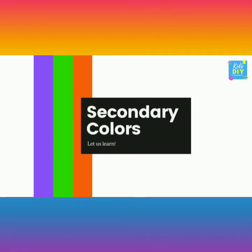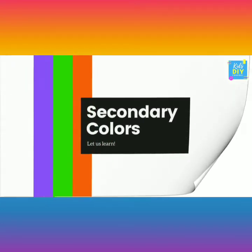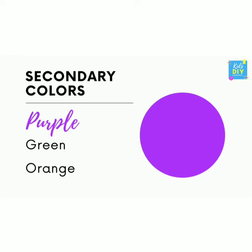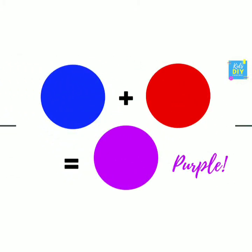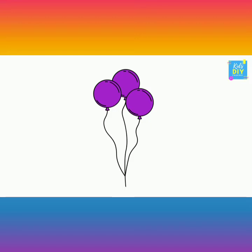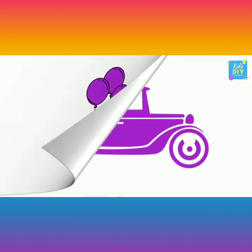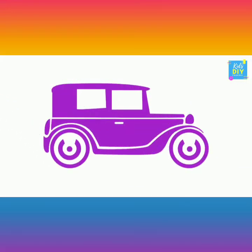Next, let us learn what are the secondary colors. Purple is the first secondary color. When we mix blue and red color, we get purple. The balloons are purple. The jeep is purple.